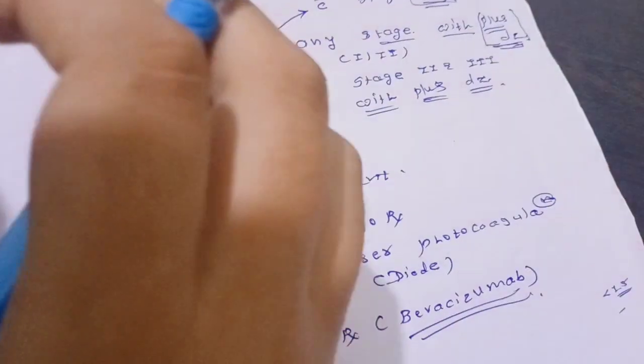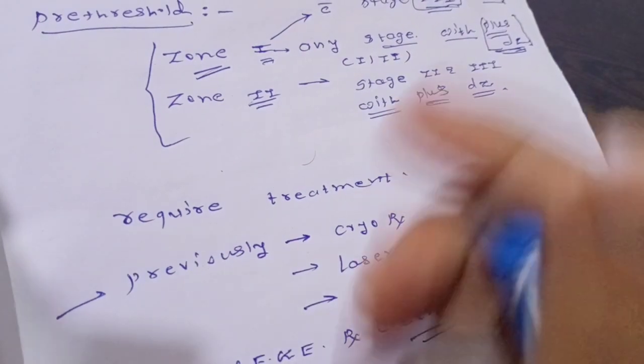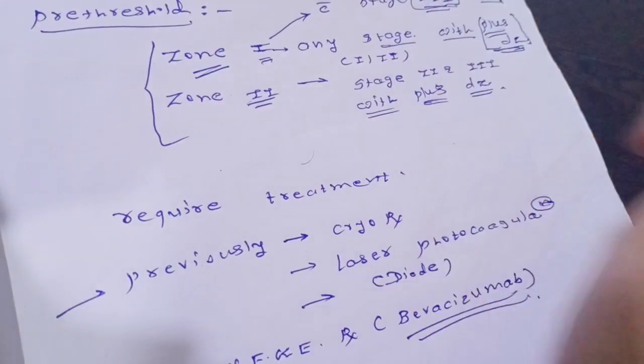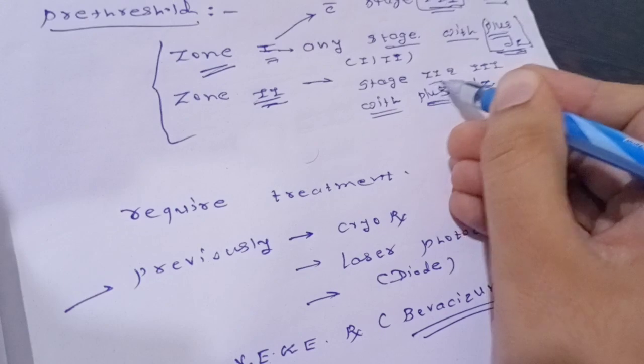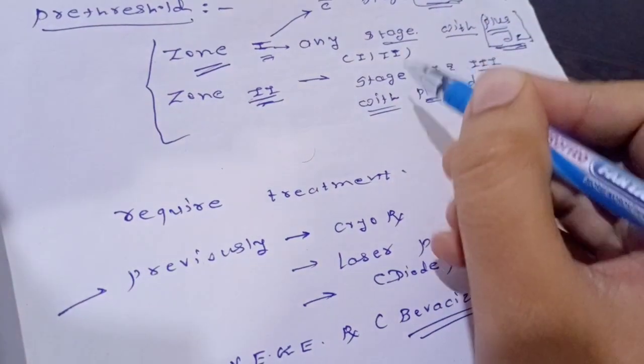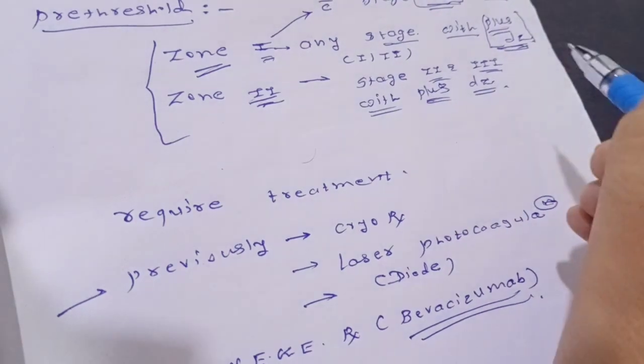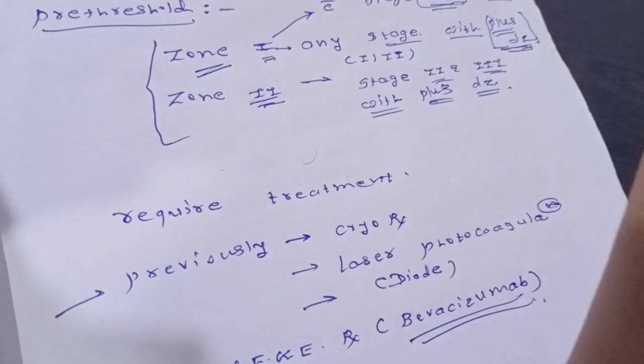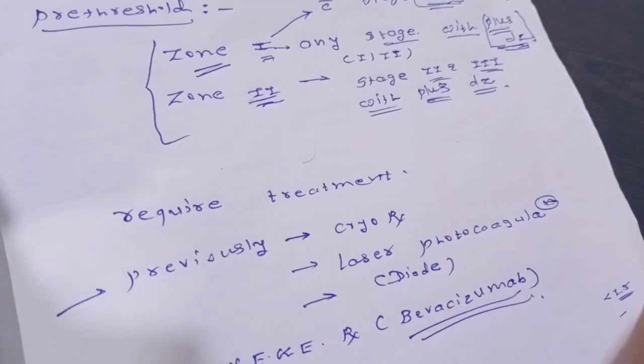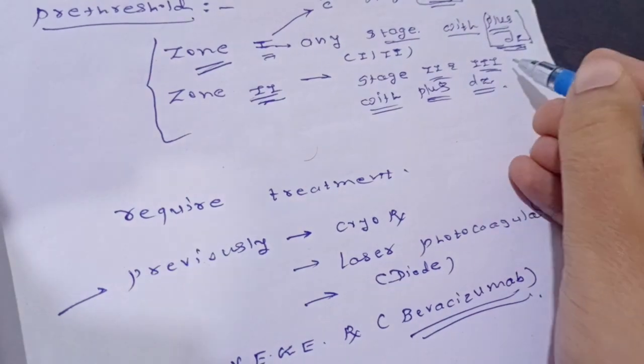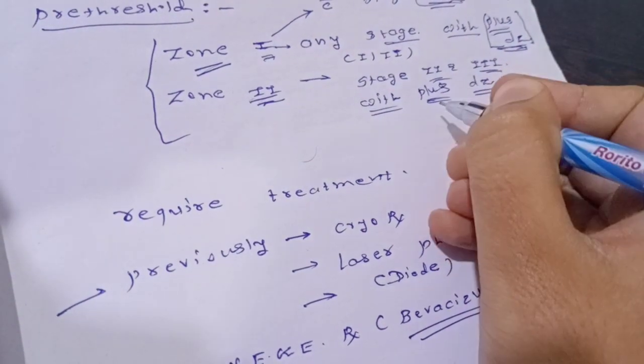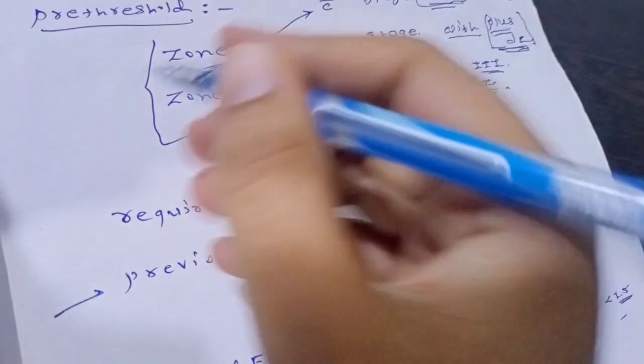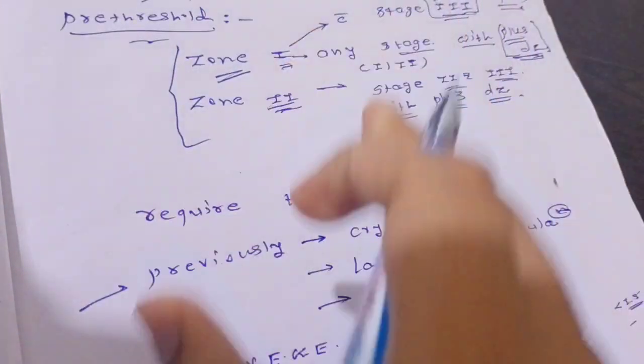Zone 2 is a little bit less risky because it's further from the optic nerve center. But in Zone 2, Stage 2 and 3 with plus disease requires treatment. It's not any stage with plus disease like Zone 1. Ridge means more than line, more elevated. Stage 3 fibrovascular proliferation with plus disease. Plus means dilated artery or tortuous vein. Stage 2 and 3 with plus disease in Zone 2 is also known as pre-threshold.